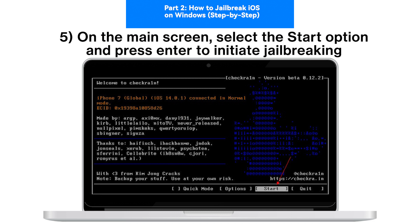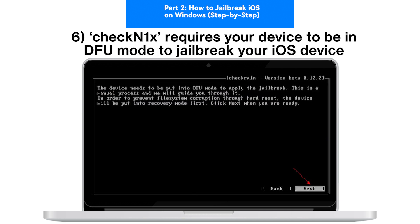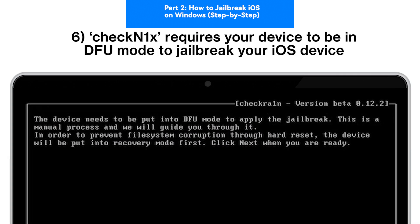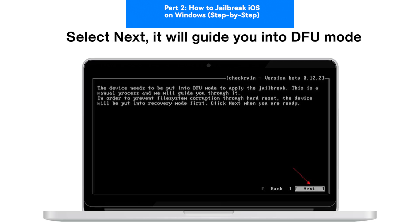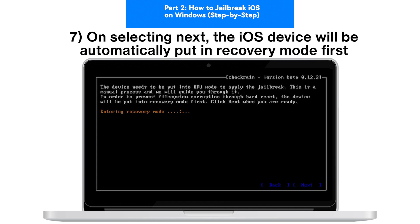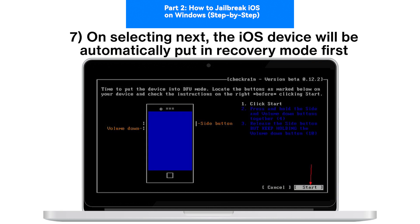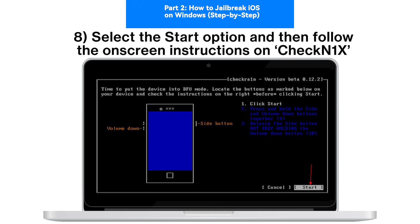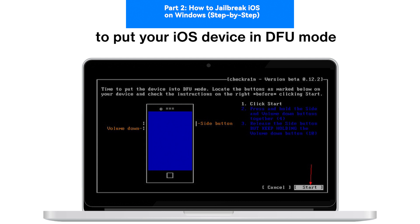On the main screen, select the Start option and press Enter to initiate jailbreaking. CheckN1X requires your device to be in DFU mode to jailbreak your iOS device. Select Next — it will guide you into DFU mode. On selecting Next, the iOS device will be automatically put in recovery mode first. Then select the Start option and follow the onscreen instructions on CheckN1X to put your iOS device in DFU mode.